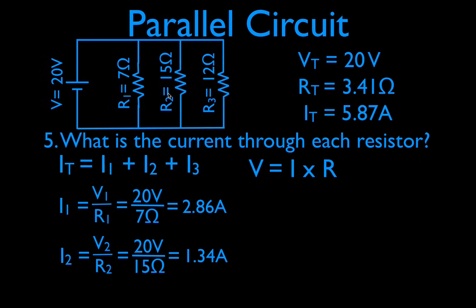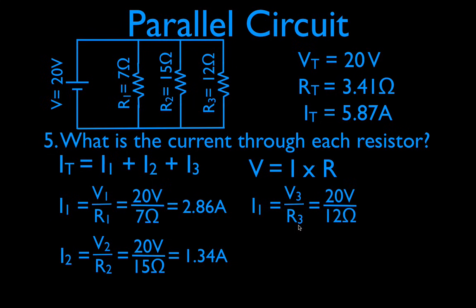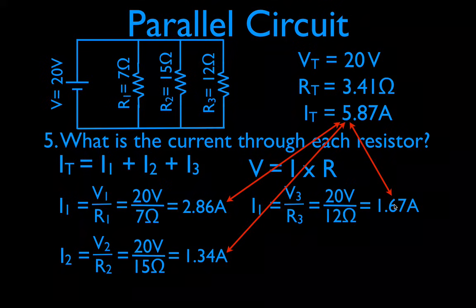You'll notice the resistance of R2 is higher — 15 versus 7 — so the current is less, about half as much. For the third branch, I3 equals V3 divided by R3: V3 is 20 volts and R3 is 12 ohms, giving 1.67 amps. Now let's check our current rule: 2.86 plus 1.34 plus 1.67 equals 5.87. They add up to the total, so we can be confident we did that correctly.